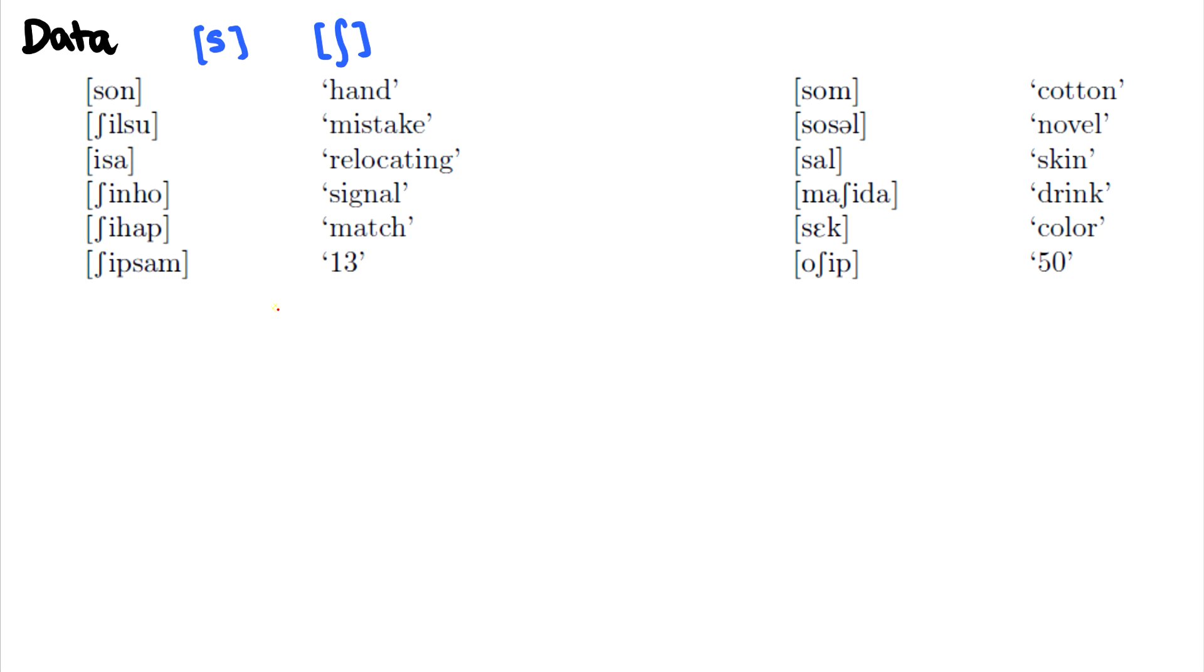And that is writing out environment charts. So an environment chart essentially pinpoints a sound and writes down one sound to the left of it and one sound to the right of it in all circumstances. So for instance let's do s first, the alveolar fricative. And we'll go word by word.